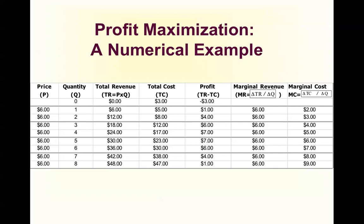We want to see where the firm is going to produce. Looking at total revenue and total cost, we can see that the maximum profit — the greatest distance between TR and TC — is going to be at a quantity of 4. But at a quantity of 4, our profit is 7. Over in the marginal revenue column, marginal revenue equals 6 and marginal cost equals 5.